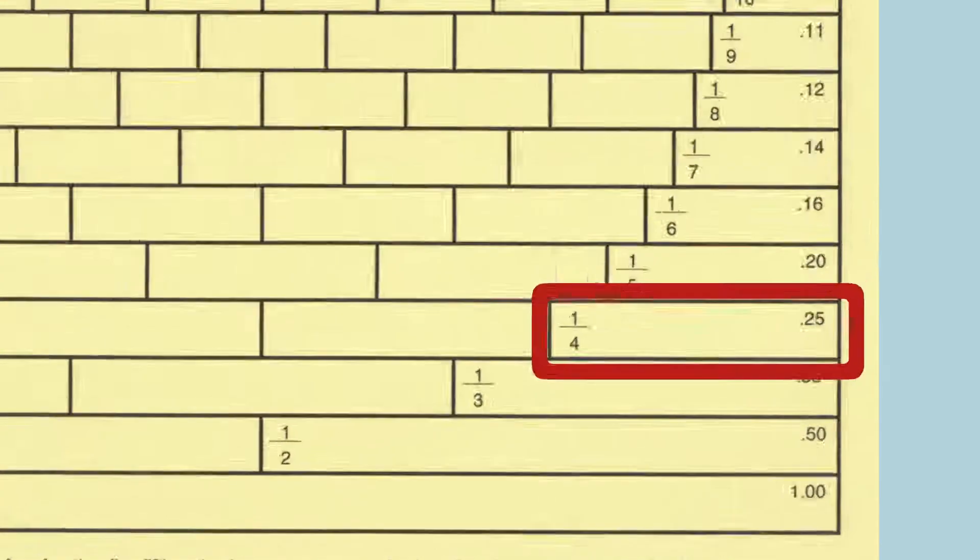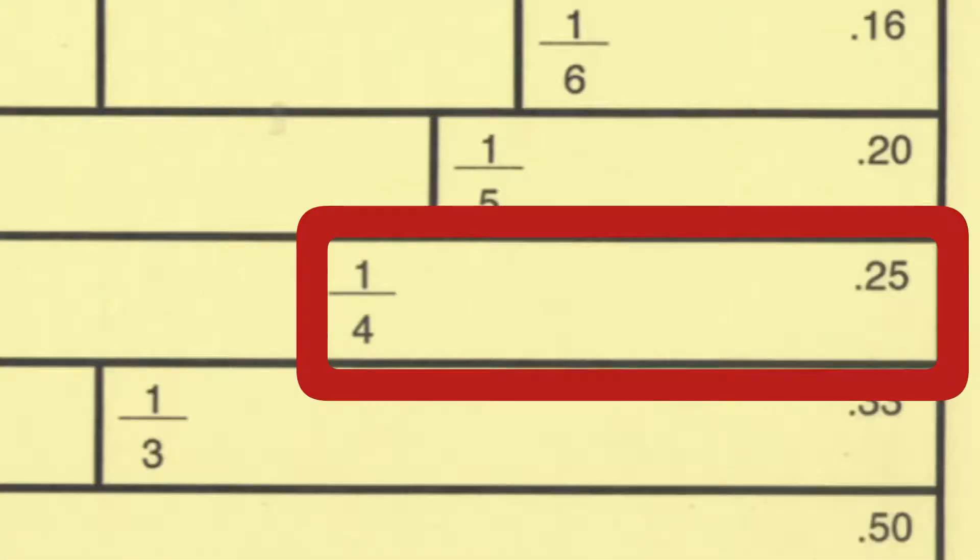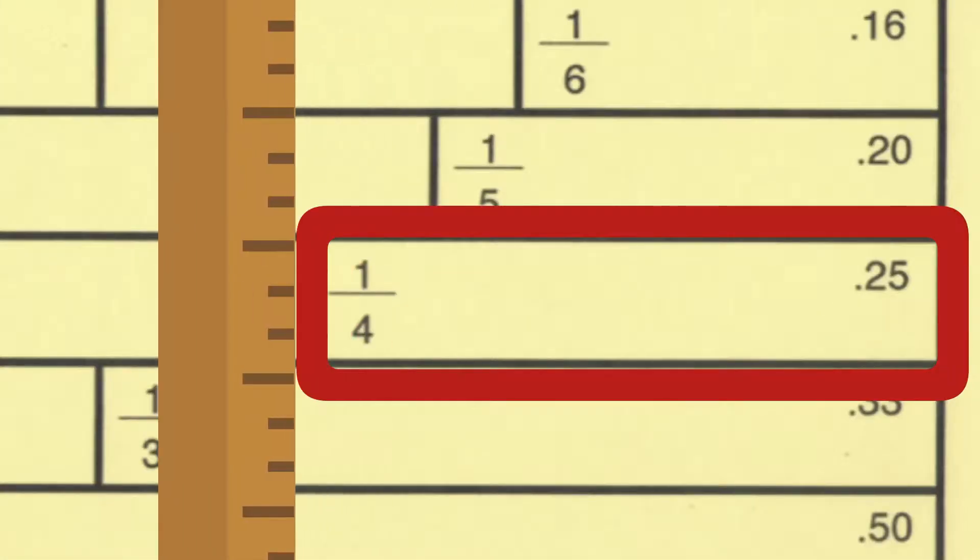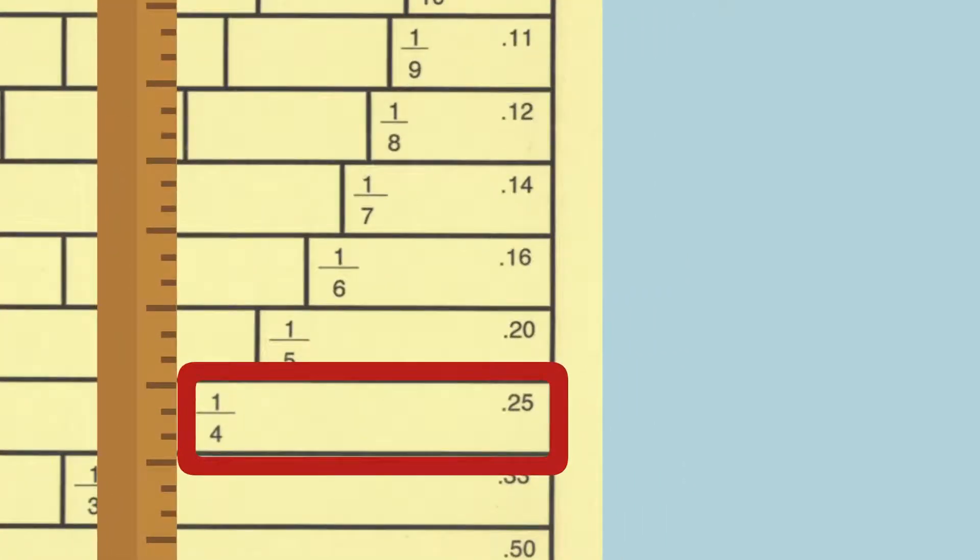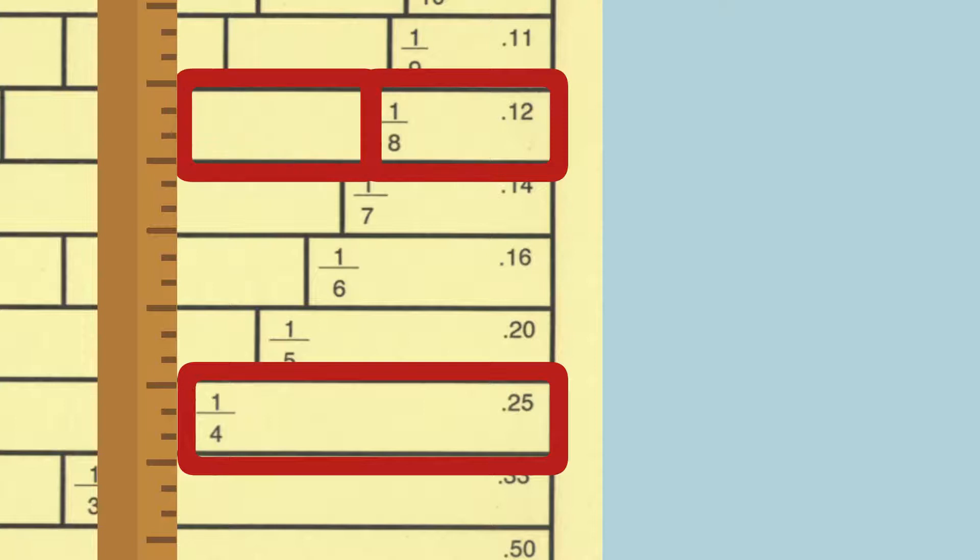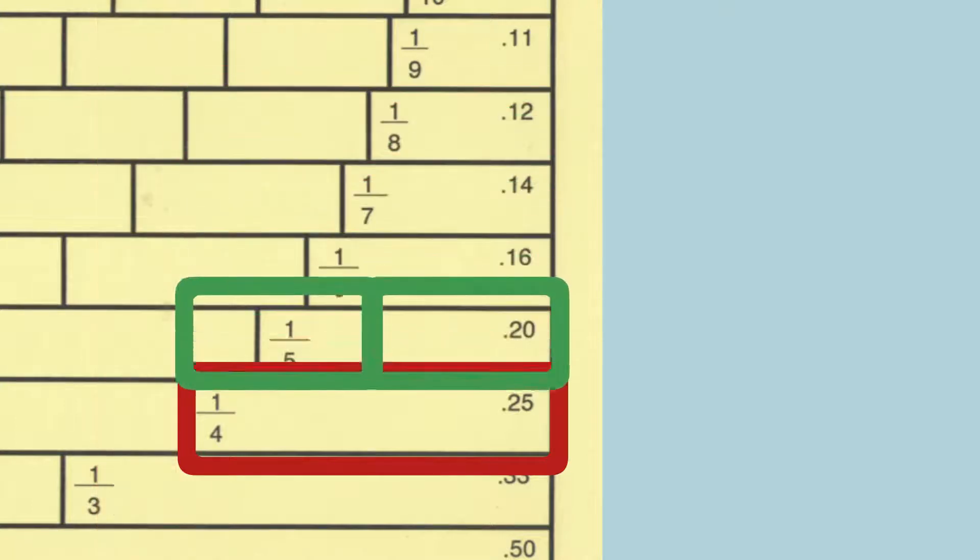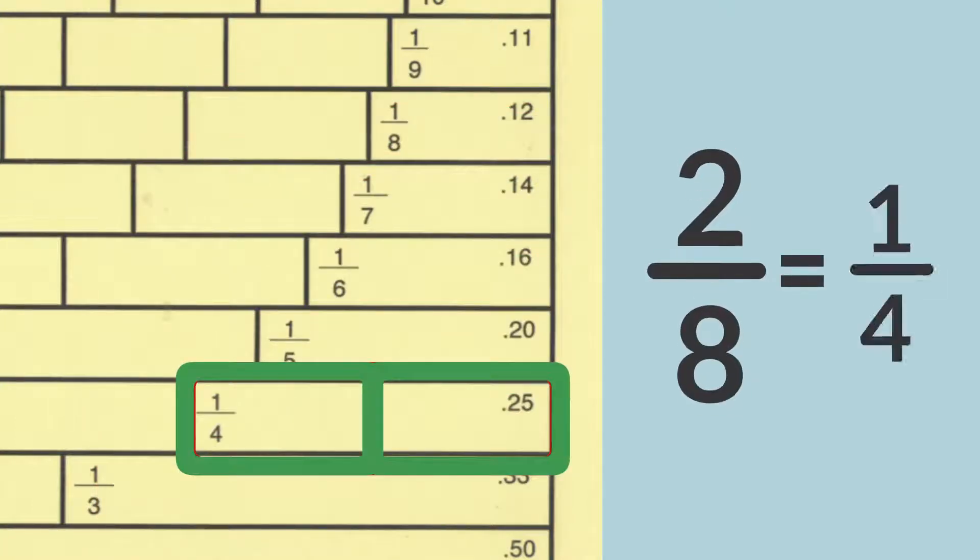Look at the brick labeled one-fourth. Put something on the left edge of this brick, going from the top of the brick wall to the bottom of the brick wall. You can use a ruler going up and down or the edge of another lesson card. Now look at the brick labeled one-eighth and the one-eighth brick that is next to it. You can see that two-eighths equals one-fourth.